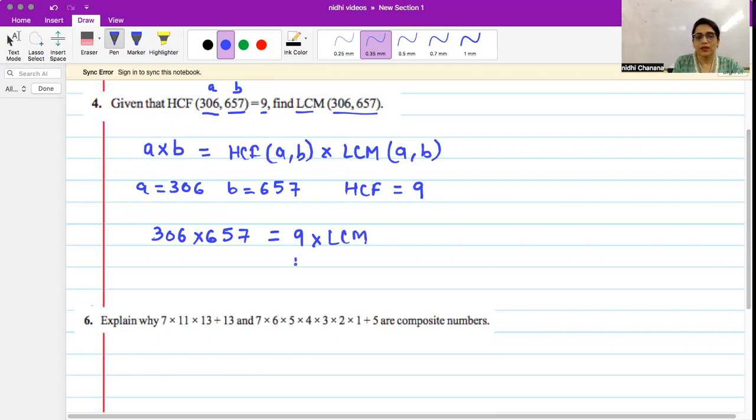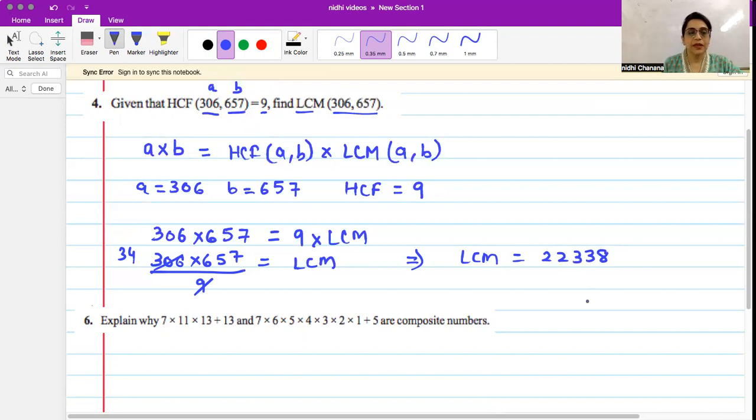Now to find the LCM, we take 9 to the left-hand side and solve. We can cancel to get 34, so when we multiply these numbers, we get the LCM as 22,338.